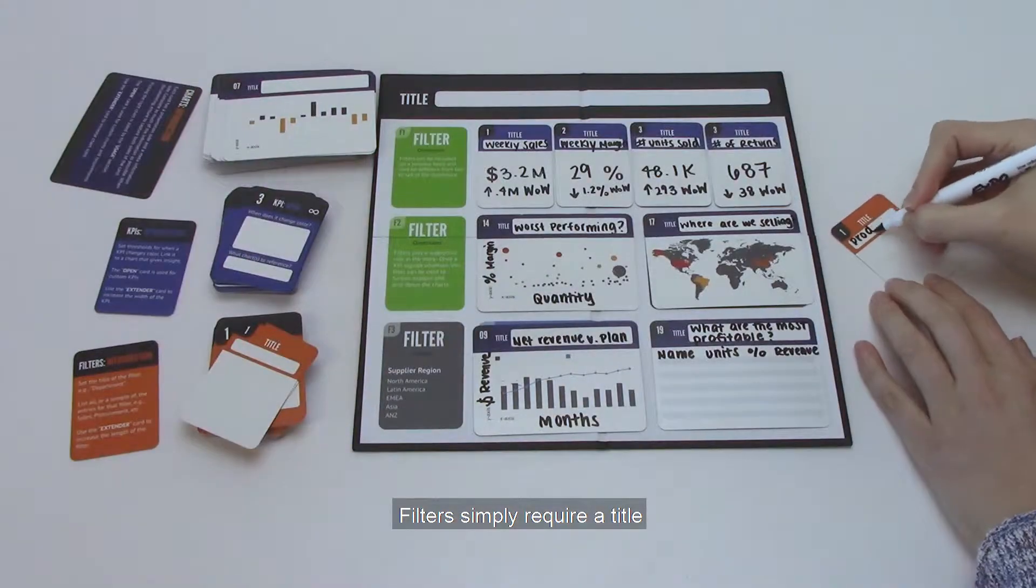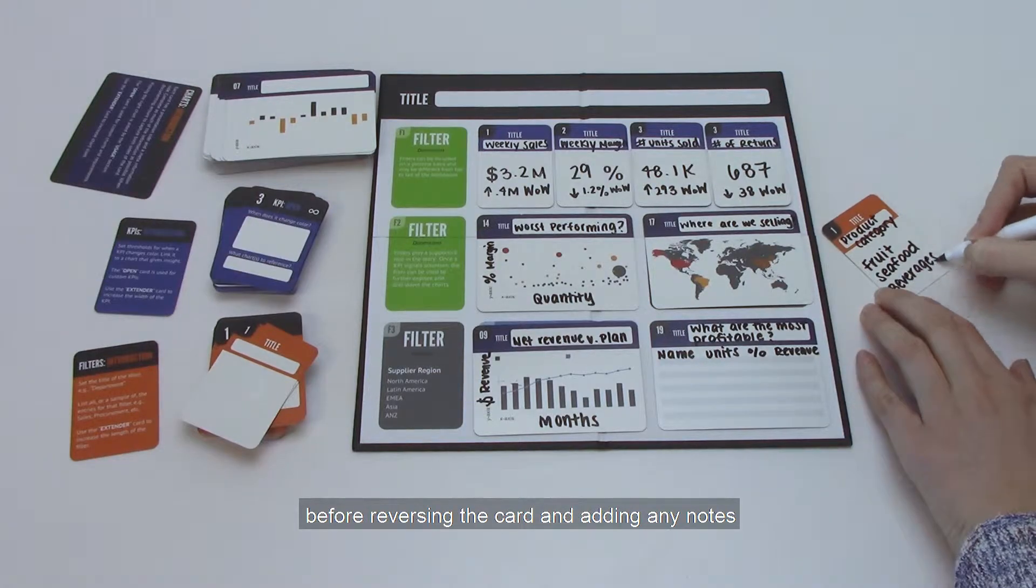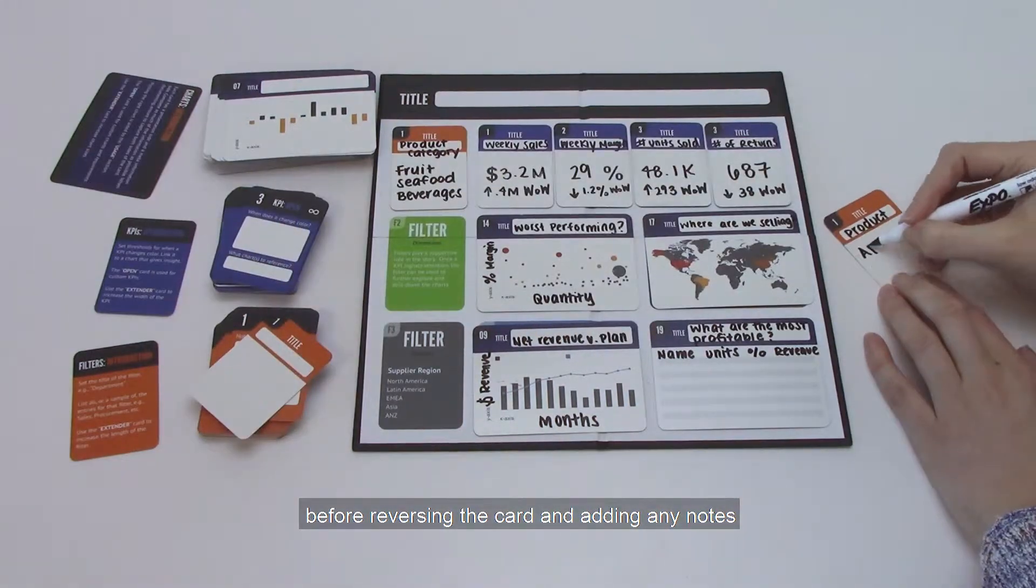Filters simply require a title and some samples of the filter categories, before reversing the card and adding any notes.